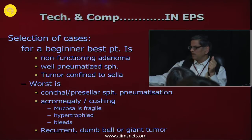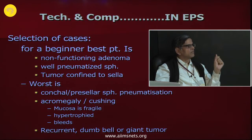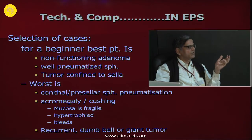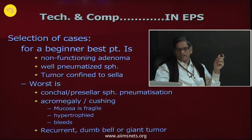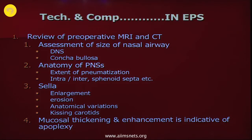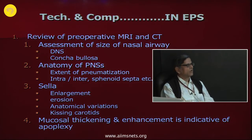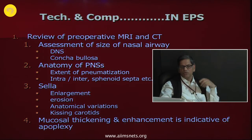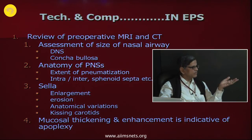For beginners, select cases carefully. The best case is a non-functioning adenoma with a well-pneumatized sphenoid sinus and tumor confined to the sella. The worst case is a conchal or pre-sellar type sphenoid pneumatization with a functioning adenoma of acromegaly or Cushing's disease, because the mucosa in these patients is fragile, hypertrophied, and bleeds. Do not attempt recurrent, dumbbell, or giant pituitary adenomas to begin with. Always review pre-operative MRI and CT scan for nasal airway assessment — DNS, concha bullosa, peranasal sinus anatomy, extent of pneumatization, intrasphenoidal septum, sellar enlargement, erosion, anatomical variation, or kissing carotids.